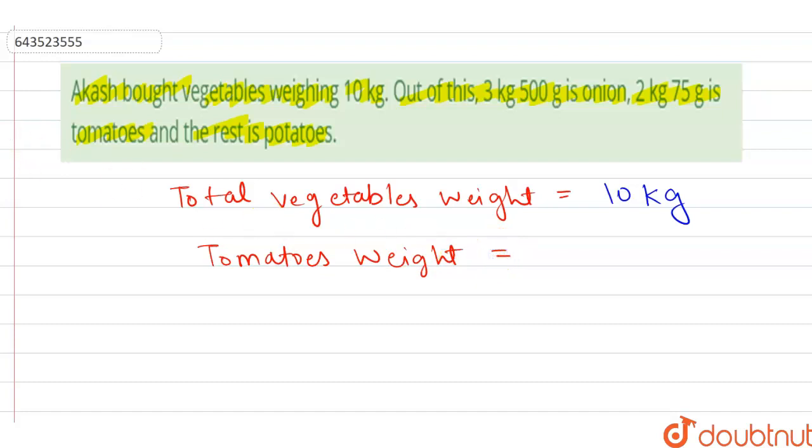weight equal to 3 kg 500 gram, and we know 1 gram equal to 1 by 1000 kg. So this can be converted into kgs which will be equal to 3.5 kg.